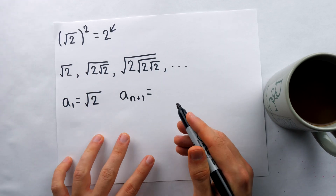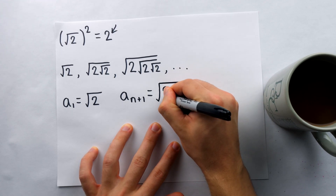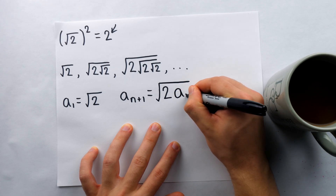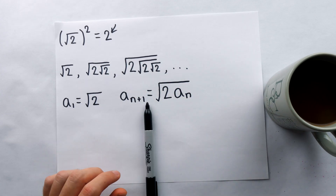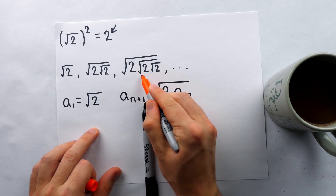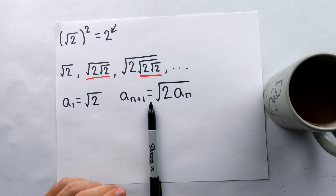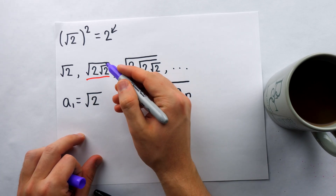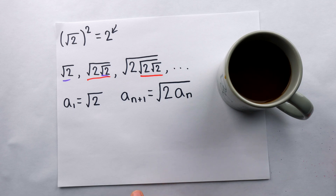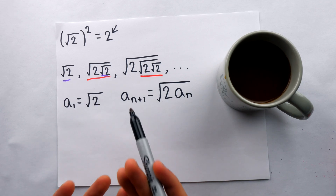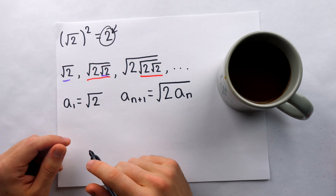The way that you construct one term from the previous term is like this: you take a square root, and then in the square root you just put 2 times the square root of the previous term, which would be aₙ in this case. Just like you saw here — how did we get the third term? We had the square root of 2, and then we multiply that 2 in the square root by the previous term. You can look at the second term that way as well — it's the square root of 2 times the previous term, which was root 2. My claim is that this really cute sequence actually converges to, it gets arbitrarily close to, the number 2. It's like a funny way of undoing the square root.